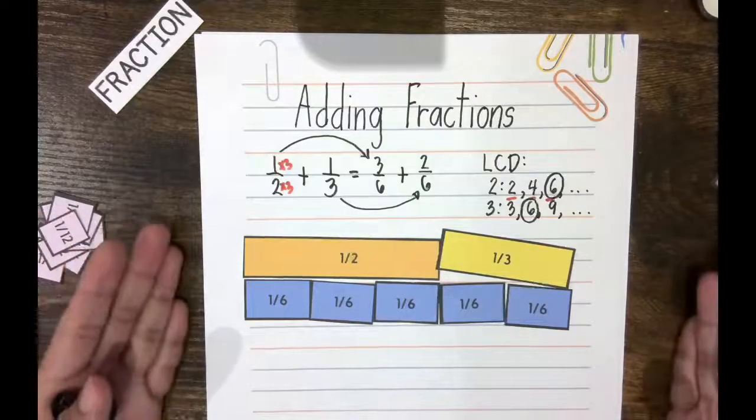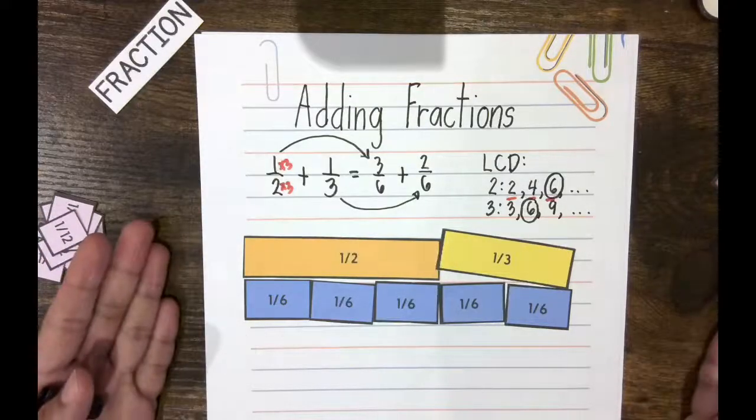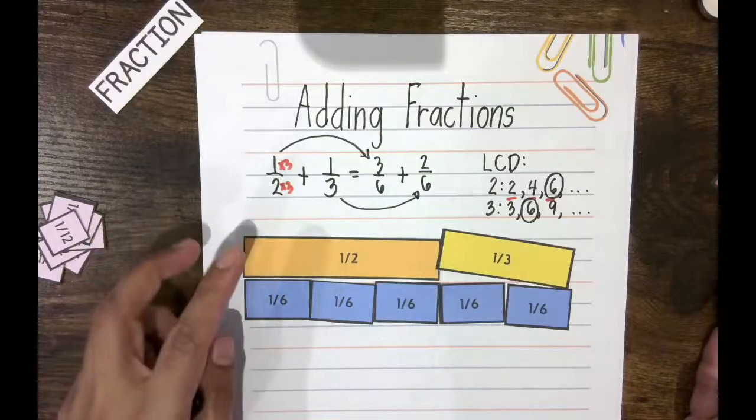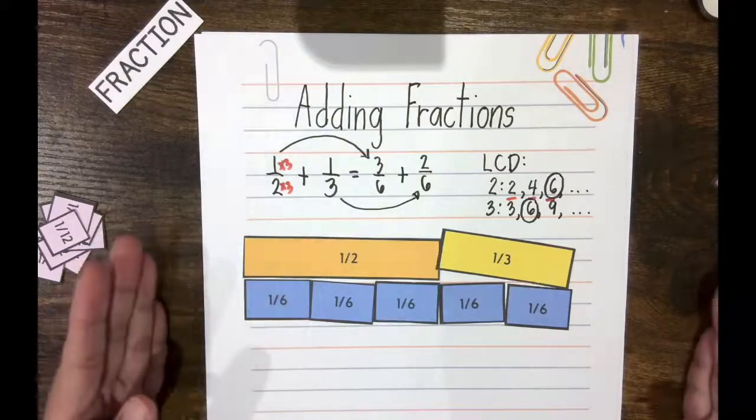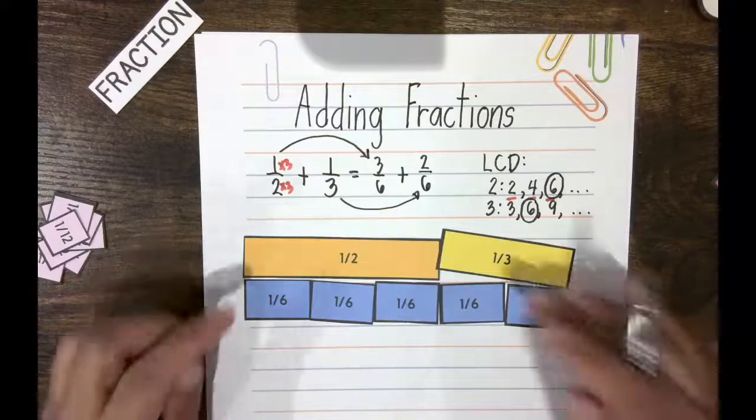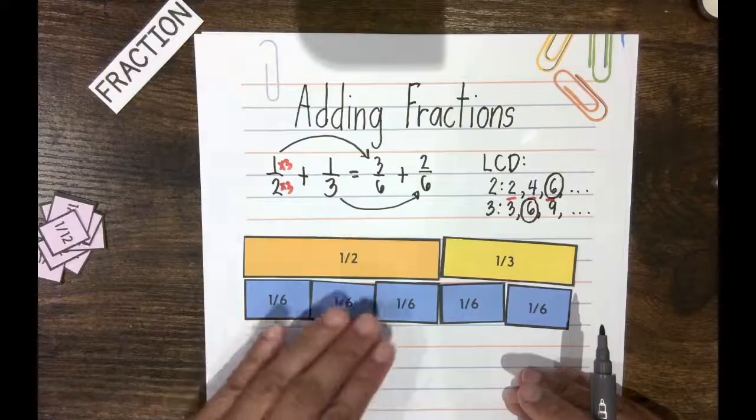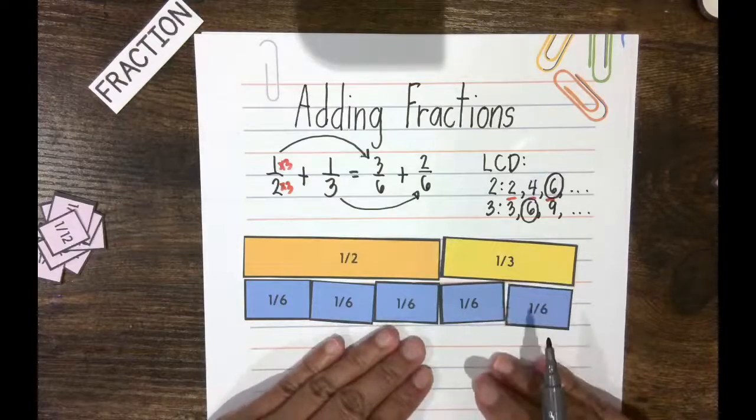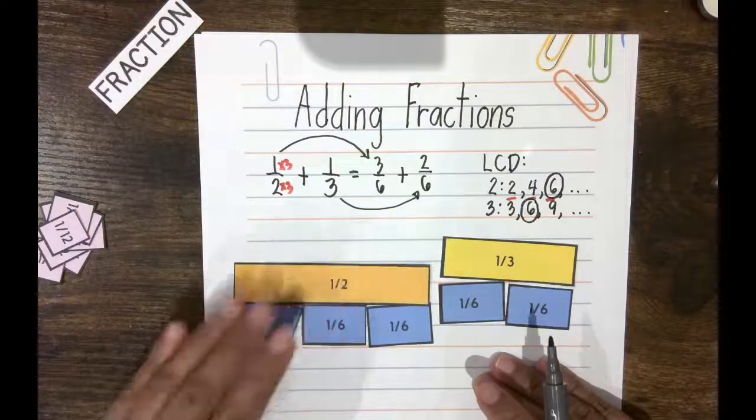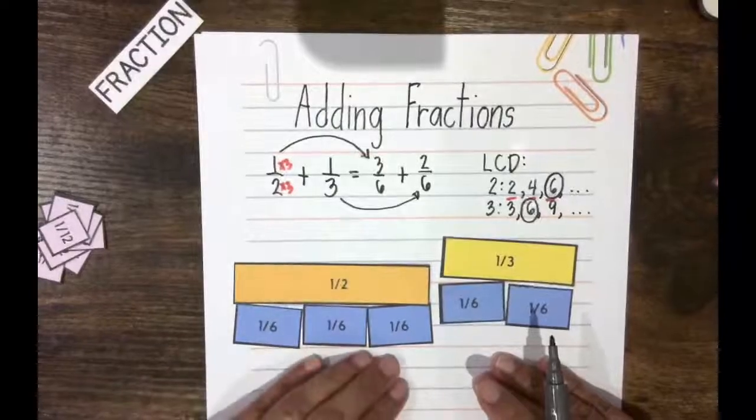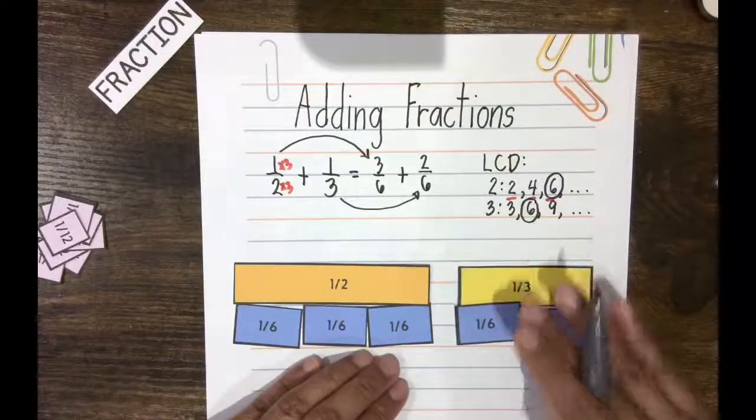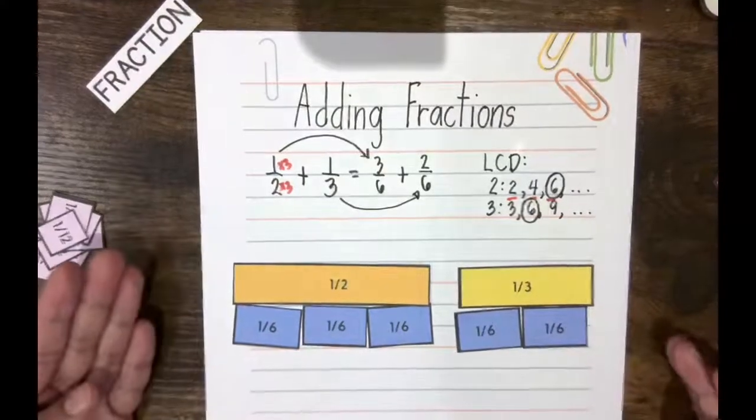So, again, why find the LCD? The whole point of that is to express the two original fractions into fractions with the same denominators. And when fractions have the same denominators, that means they are made up of unit fractions of same size, like expressing 1/2 into groups of 1/6, and expressing 1/3 into also groups of 1/6.